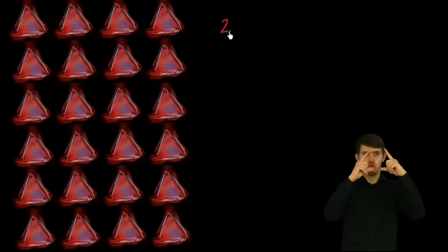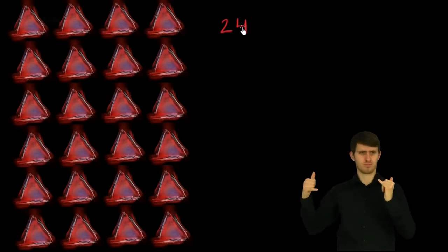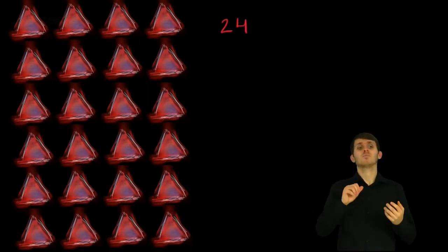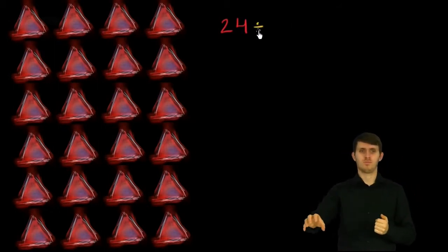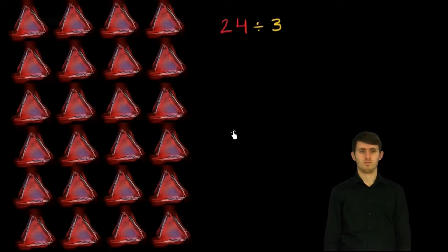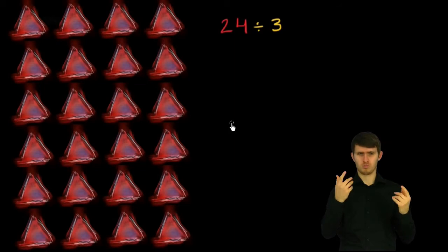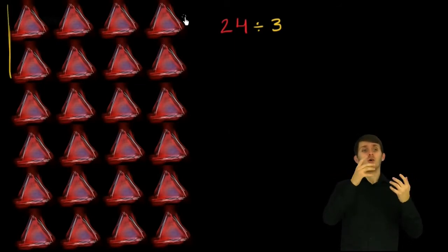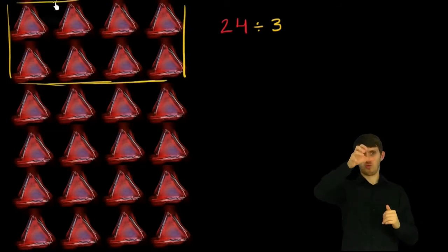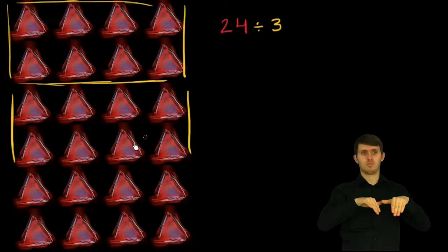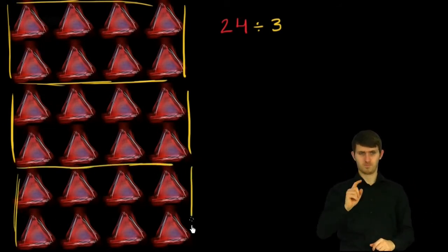We've got 24 triangle things right over here. What I want to do in this video is to divide them into different numbers of groups. The first thing I want to do is divide these 24 triangle things into three groups and think about how many I end up with per group. So I'm going to divide them into three equal groups — that is one equal group, then another equal group, and then a third equal group.